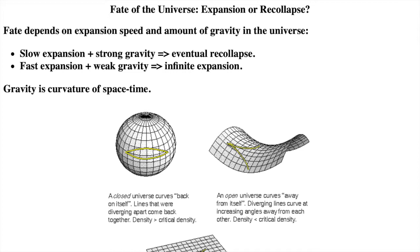If the expansion is slow enough and the gravity is strong enough, the universe has a positive curvature and will eventually collapse back on itself. Time has a beginning and an end. If the expansion is fast enough and the gravity too weak, the universe has a negative curvature and will expand forever.